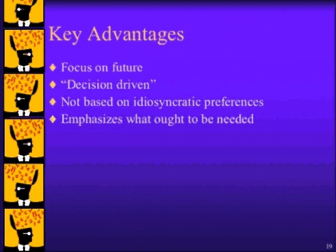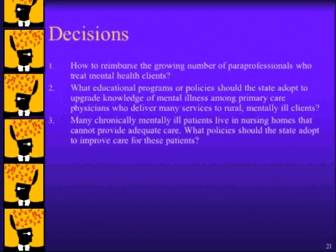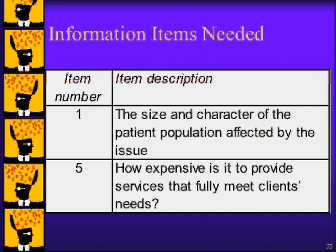To illustrate, take this example. We were asked to design an information system for mental health commissioners within different states. The first step was to identify upcoming decisions. We brought together a panel of experts and mental health commissioners to identify upcoming decisions that the commissioners will need to address within a year or two. Six different decisions were identified, three of which are listed here. Next, we asked the panel to identify the information items commissioners may need. They identified 69 different information items, two of which are listed here. It is important to note that these 69 items are not information that these commissioners need in general, but information that they need for the six specific upcoming decisions.